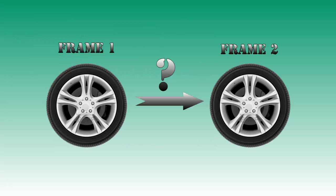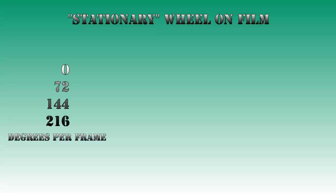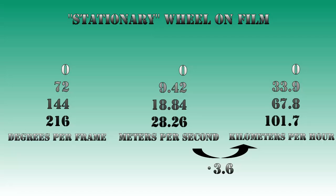For the wheel to appear to stand still, the closest spoke after 1/30th of a second must be aligned with the old spoke. With five spokes, this means the rotation is 0 plus 72 times n degrees, where n is an integer. So the wheel will appear to stand still at 0, 72, 144, and 216 degrees of rotation per 1/30th of a second, correlating with speeds of 0, 9.42, 18.84, and 28.26 meters per second — or 0, 33.9, 67.8, and 101.7 kilometers per hour.